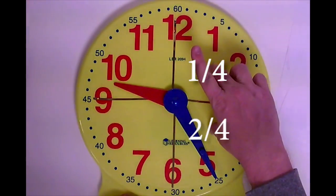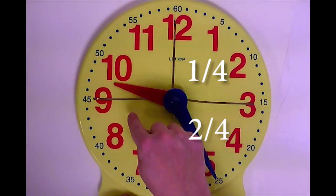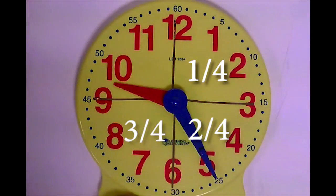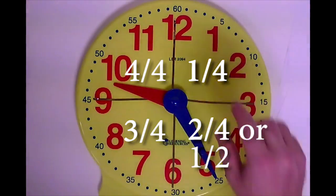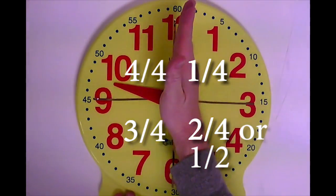If I do both of these, that's two fourths. If I do three of them, it's three fourths. And if I do four of them, that's four fourths. Two fourths is also equal to one half, because I'm covering one half of the clock.